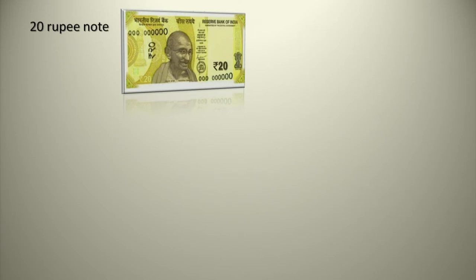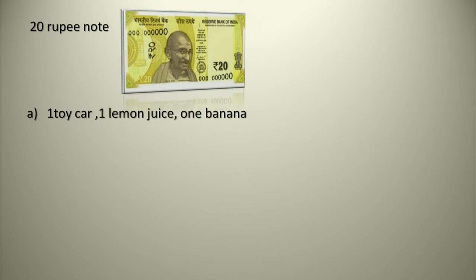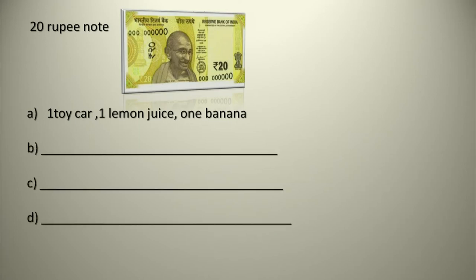Here is a trick: I have only 1 twenty-rupee note and I want to buy different things. You have to see which items cost less than 20 rupees, and by adding their rates it should not exceed 20. I have done one example for you: 1 toy car costs 15 rupees, lemon juice 3 rupees 50 paisa, and banana 1 rupee — that totals 19 rupees 50 paisa, so I can buy all three with 20 rupees.